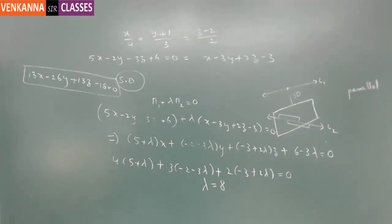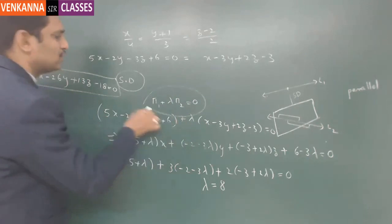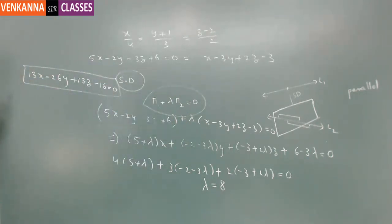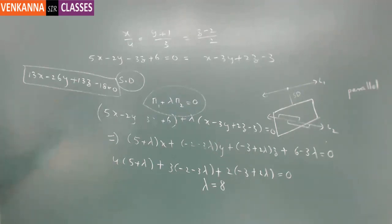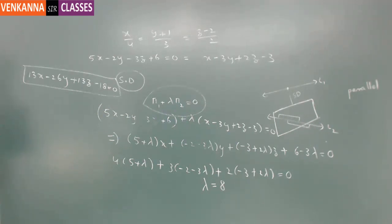Every plane passing through L2 is of the form pi 1 plus lambda pi 2 equals 0, and lambda is determined as per our need. We can use parallel, passing through a point, perpendicularity, or passing through coordinate planes as the condition to determine lambda. If the plane is parallel to L1, then the normal is perpendicular to that line. So lambda is determined as per our required choice.